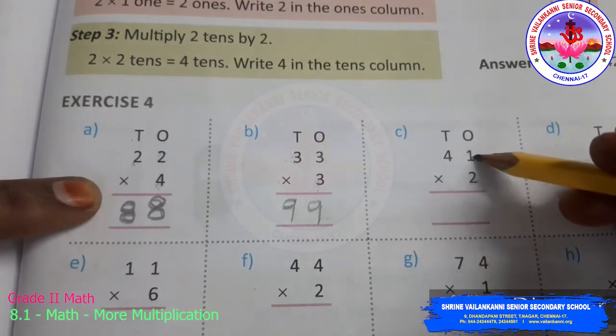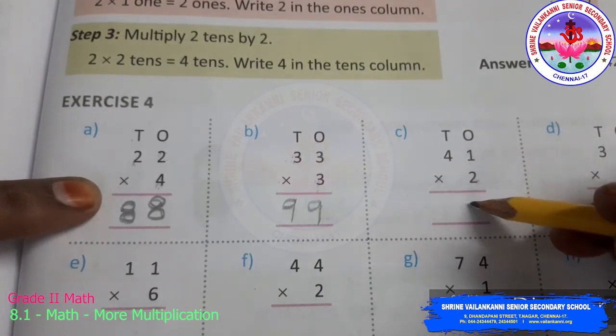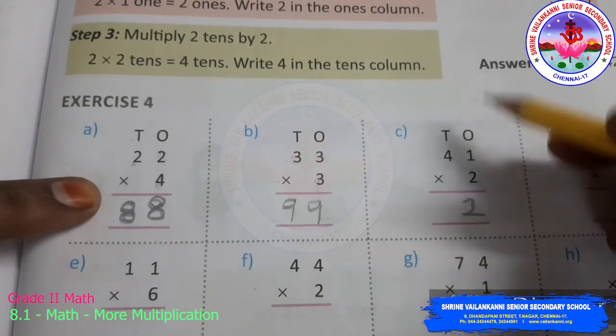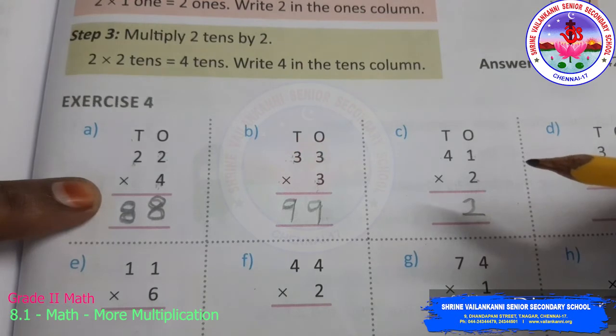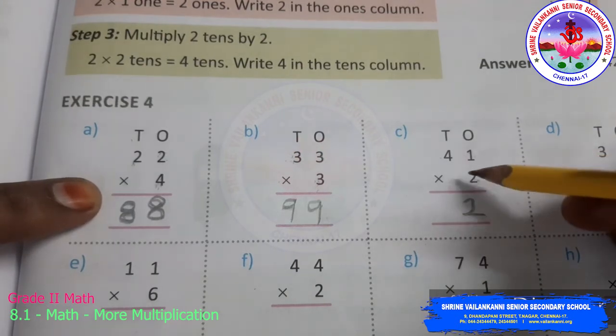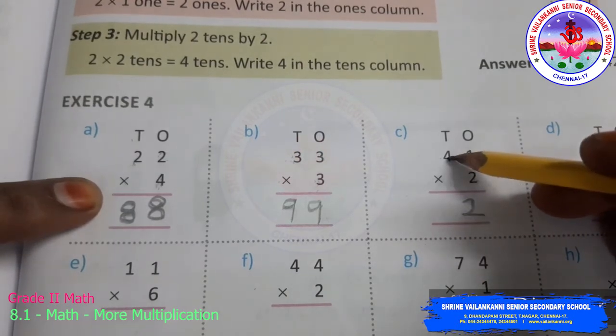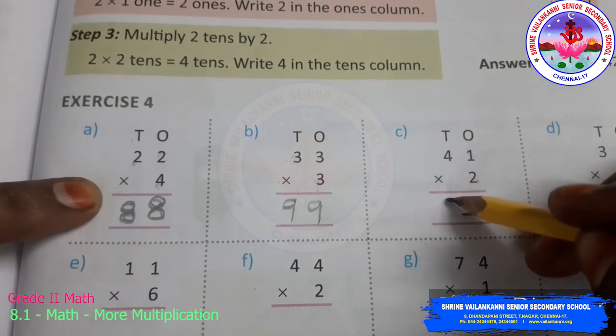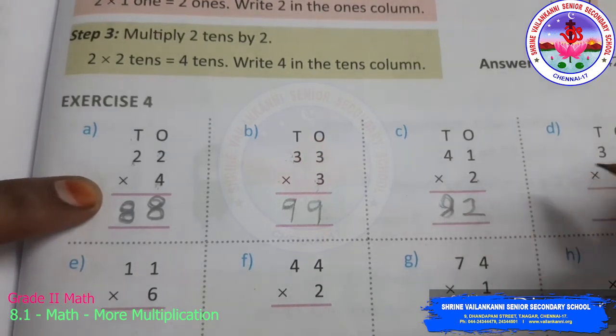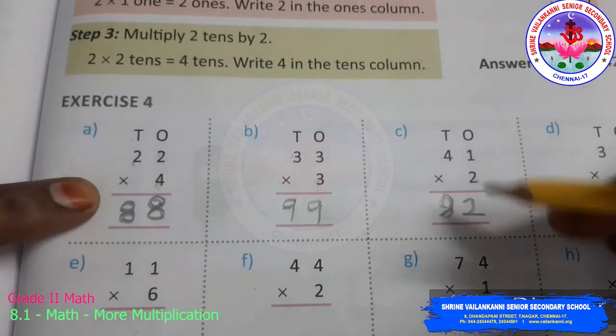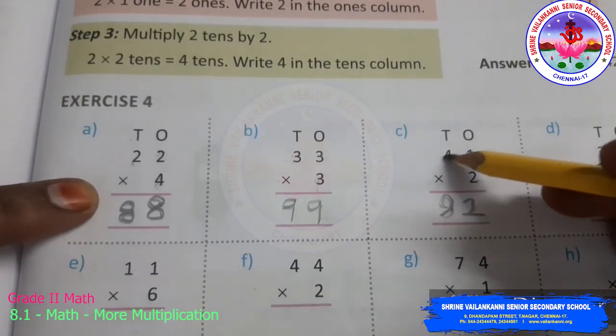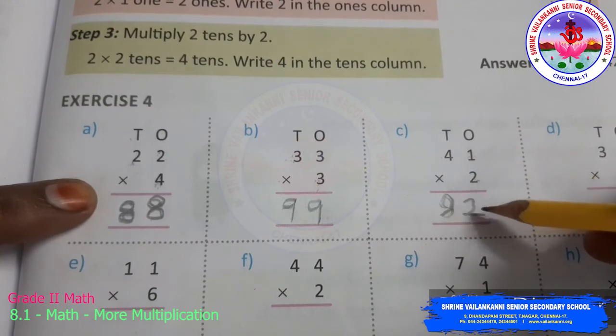41 into 2. 2 ones are? Yes. 2 ones are? 2. Very good. 2 fours are? Yes. I can hear some answers. 2 fours are? 8. Very good. I know. You all know the two tables very well. Because you have studied in grade 1. The previous chapter. So, 41 into 2 is 82. Superb.